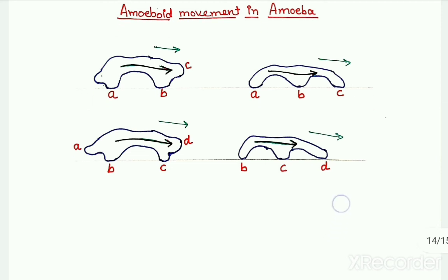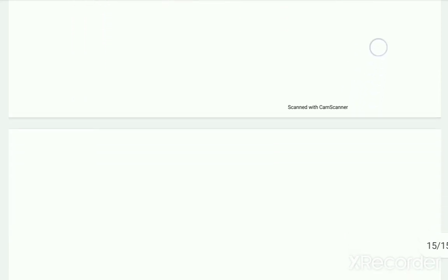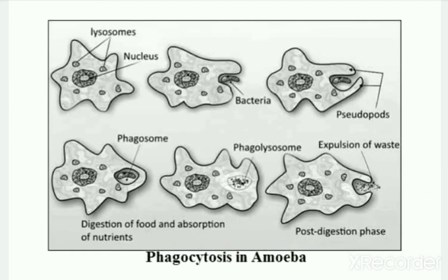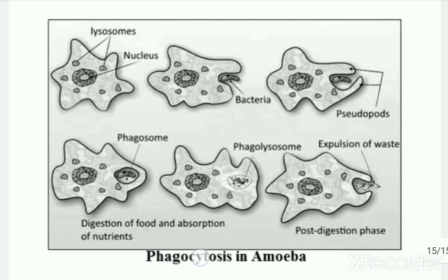That is all about the locomotion with help of pseudopodium in case of amoeba. But apart from helping in locomotion, pseudopodia also play another very important role in case of amoeba: they help in feeding by capturing food by the process of phagocytosis.